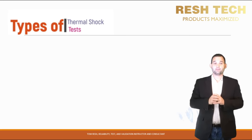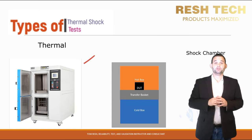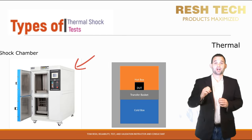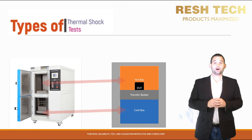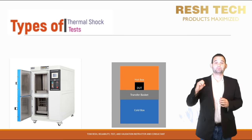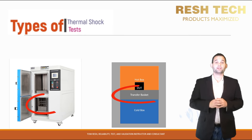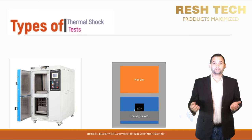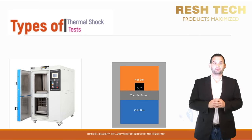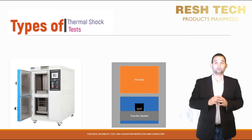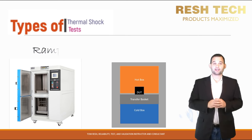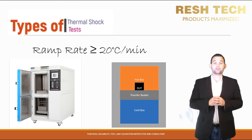There are several methods to accomplish this. The first is to use a specialty chamber called a thermal shock chamber. Thermal shock chambers have a hot and cold box. A test part or system is placed in what is called a basket, which transfers either vertically or horizontally depending on your chamber type between the hot and cold boxes. Typically, the transition between hot and cold boxes happens at a ramp rate greater than or equal to 20 degrees Celsius per minute.